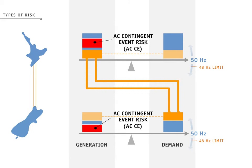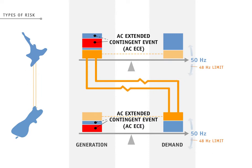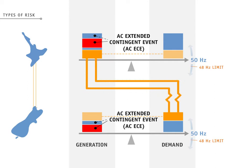An AC contingent event, or ACCE, is defined as losing the largest single unit of generation. An AC extended contingent event, or AC-ECE, is defined on a station basis that can include losing an interconnected transformer or a bus bar fault, which could be the loss of multiple generators.